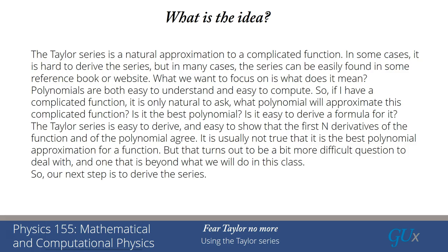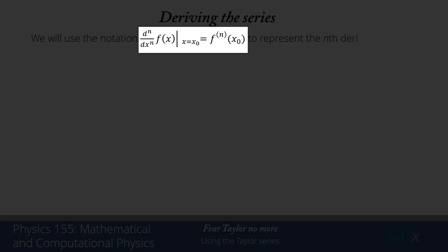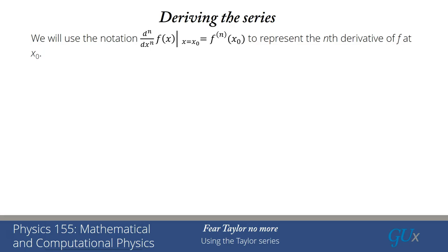So our next step is to derive the series itself. So how do we derive the series? We have to fix some notation first: the nth derivative of the function f evaluated at x equals x₀. That is our notation for the nth derivative of f at the point x equals x₀. It's a fairly common notation one that you've probably seen before, but if you haven't this is a new notation and it is important that you remember this notation.